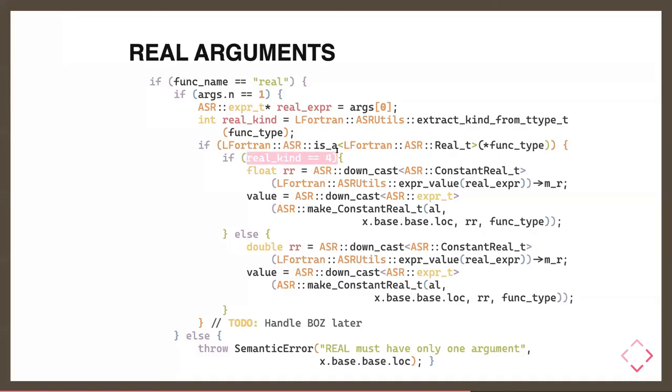There's one question in the chat about a magic number four. There is a magic number which we're currently using. We're working on getting rid of that. The magic number — I believe it's this one, where we're saying the real kind has to be a certain value. Good catch, and yes, we're working on getting rid of that.